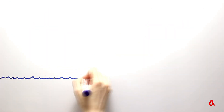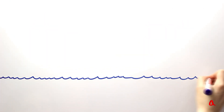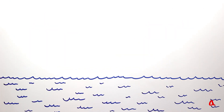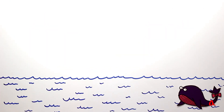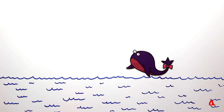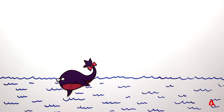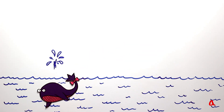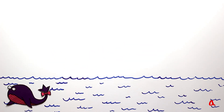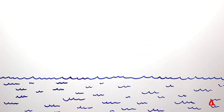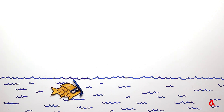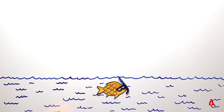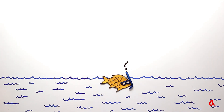One can measure not only the speed of wind, but also the speed of a water flow using pressure force. A French engineer Henri Pitot wondered what speed of water flow had at the bottom of a river. How can the speed be measured?